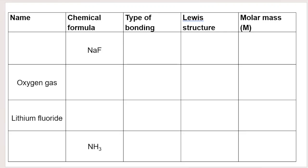We're just going to fill in the table working from the first row down. The only thing given in row one is NaF, and they tell me that's the chemical formula. Let's start by filling in the chemical name. Na is sodium and F is fluorine, so when bonded to the metal it becomes fluoride. When the non-metal bonds to the metal, the end of the name changes to -ide — they're together now. So sodium fluoride is the chemical name.